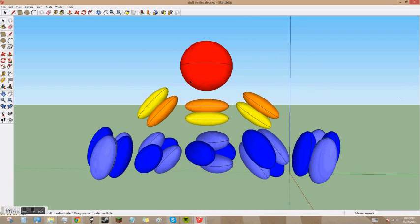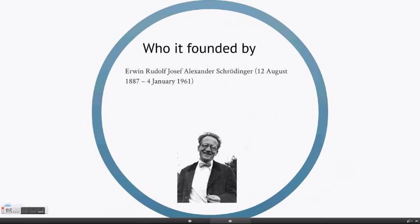Who was it founded by? It was founded by Erwin Rudolf Josef Alexander Schrödinger, born on the 12th of August, 1887, in Vienna, Austria, and died on the 4th of January, 1961. He was an Austrian physicist.